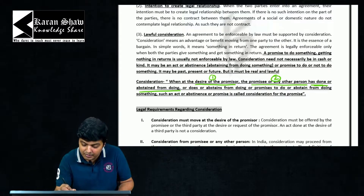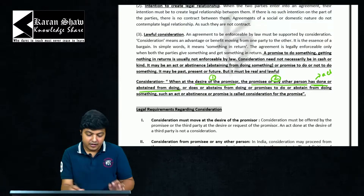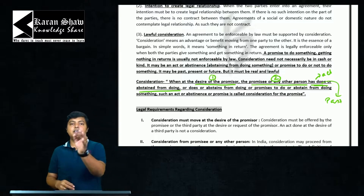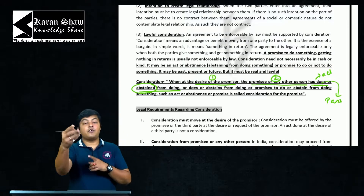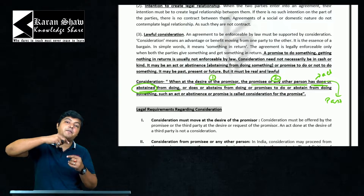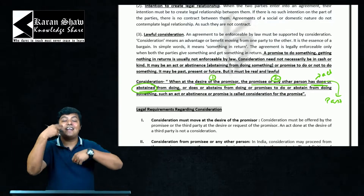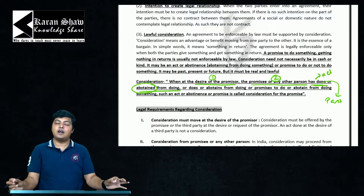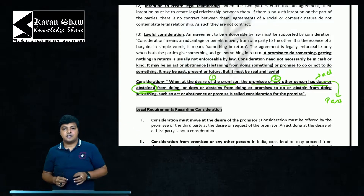Has done or abstent from doing — for example, Koila did not open his shop for Chandi — that is the negative act. The negative part: if someone says 'I will not do this,' that also becomes a consideration for the other party.